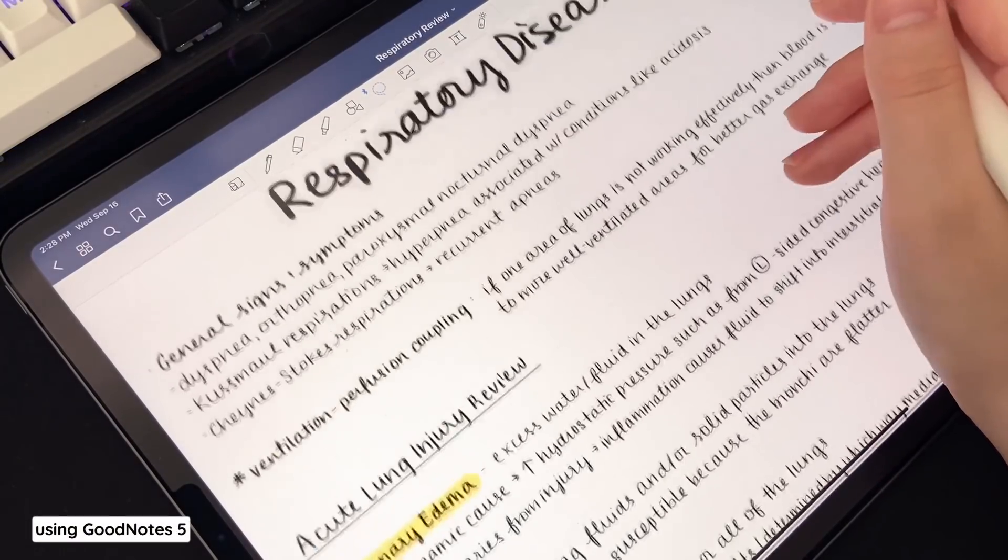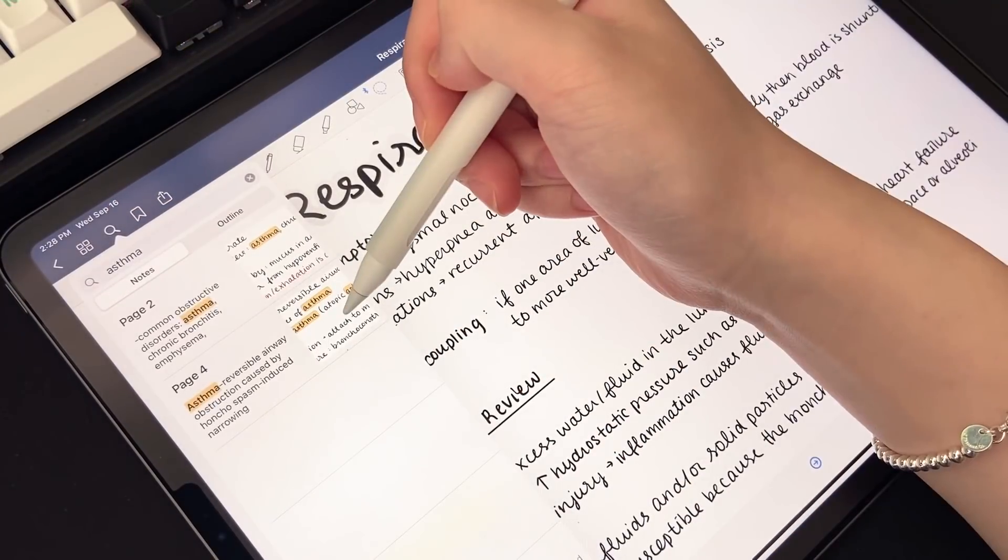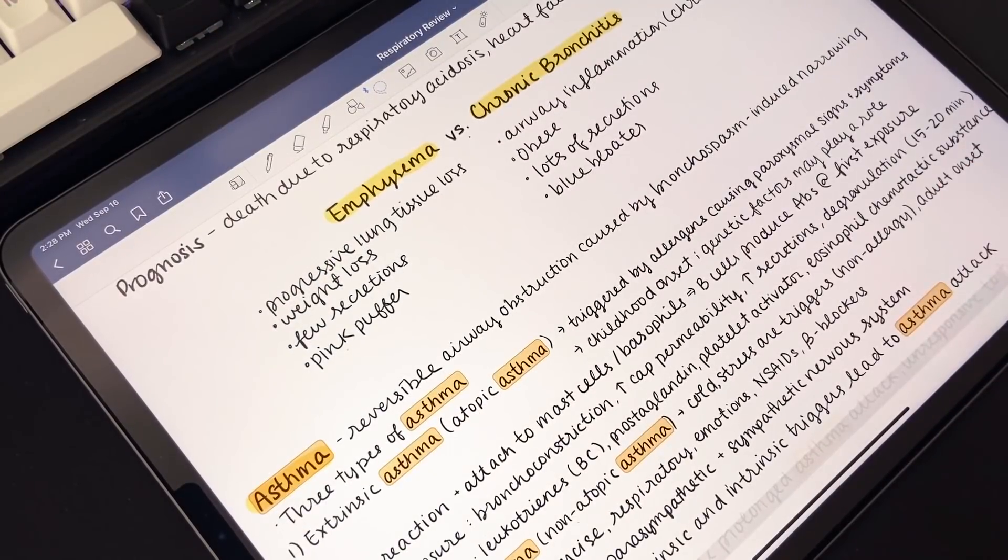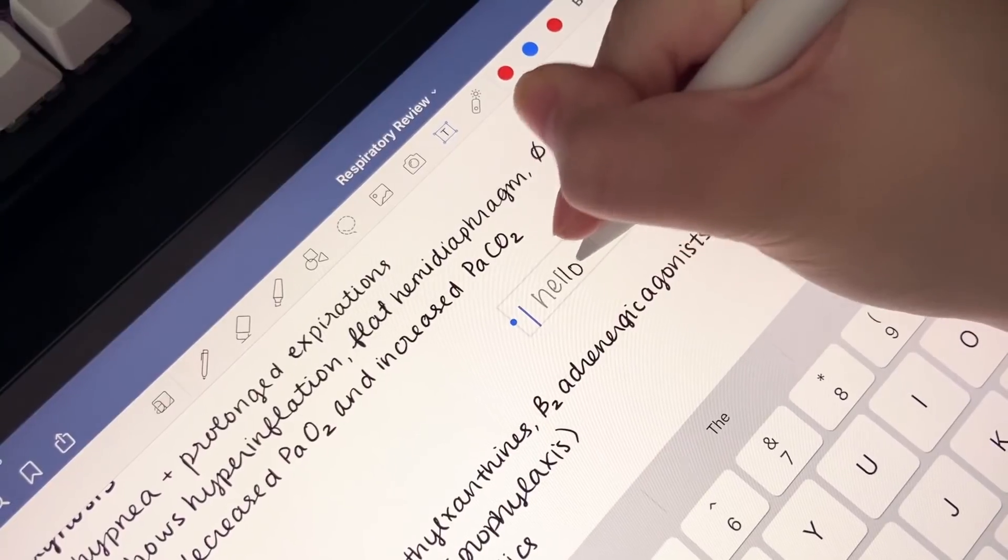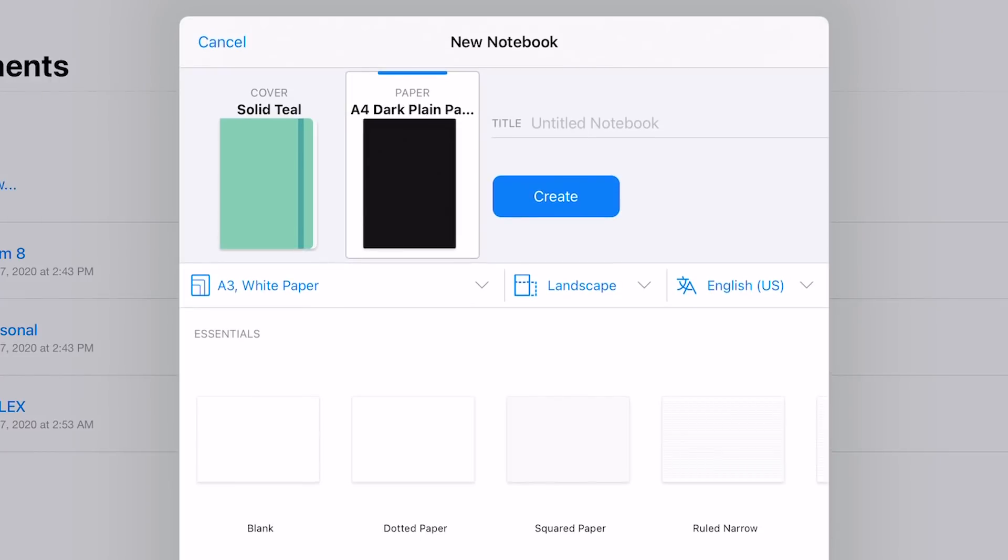Fortunately, Scribble works in GoodNotes 5, so you can actually use your Apple Pencil to write in any text field, for instance, the search bar to find a keyword. You can also write in a GoodNotes text box. When making a new notebook, you can use Scribble to write out the notebook name, and you can also use Scribble to name your new folders.